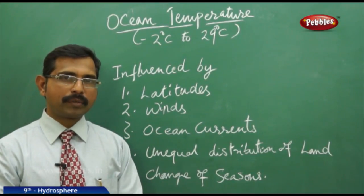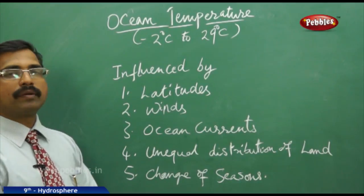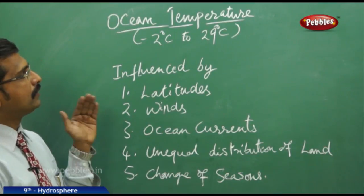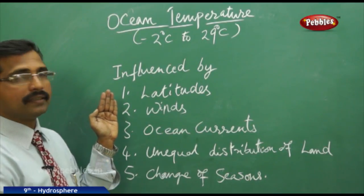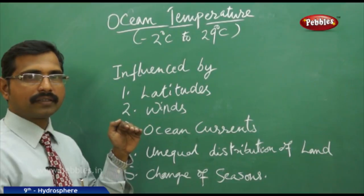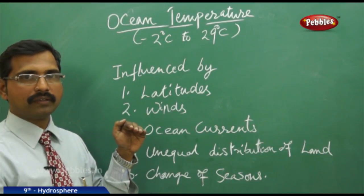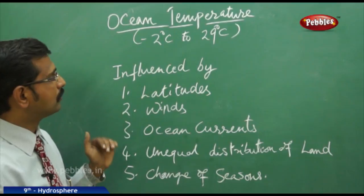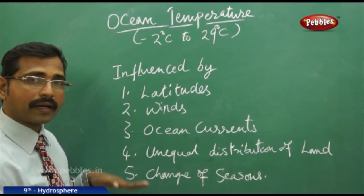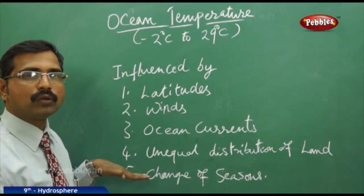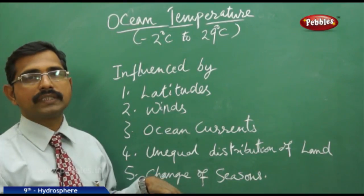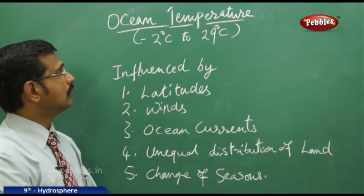Now we understand about ocean temperature. The temperature varies from minus 2 degrees to 29 degrees Celsius. Ocean temperature is mainly influenced by latitude — the equator has a different temperature compared to polar regions. Winds, ocean currents, unequal distribution of land, and change of seasons also influence ocean temperature.